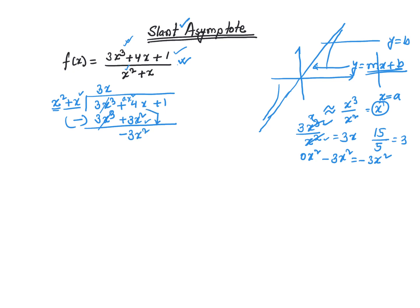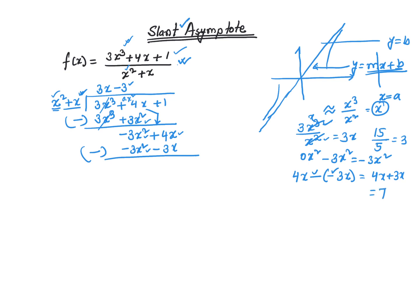I bring down the 4x, like you bring the next digit down. Now, how many times does x squared go into negative 3x squared? That's just negative 3. So it's negative 3x squared, and negative 3 times x gives you negative 3x. Again, we subtract. Negative 3x squared minus negative 3x squared is 0. From 4x, you subtract negative 3x — and this is where mistakes happen — you are subtracting negative 3x, so negative times negative is positive 3x, giving you 7x. Then I bring down the positive 1.